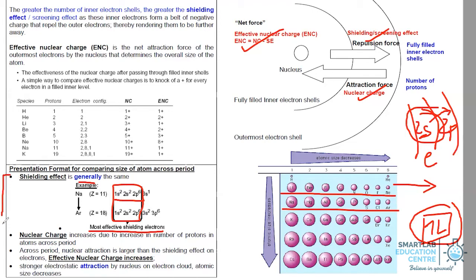In summary, the first presentation point when asked to comment about the size of an atom is to look at electronic configuration and conclude whether shielding effect increases or decreases. Across the period, shielding effect is generally the same because all period three elements have the first and second electron shells fully filled providing shielding. Nuclear charge increases as each element gains an additional proton. With nuclear charge increasing and shielding effect roughly the same, the effective nuclear charge increases, leading to stronger electrostatic attraction on the electron cloud and therefore a smaller atomic size.